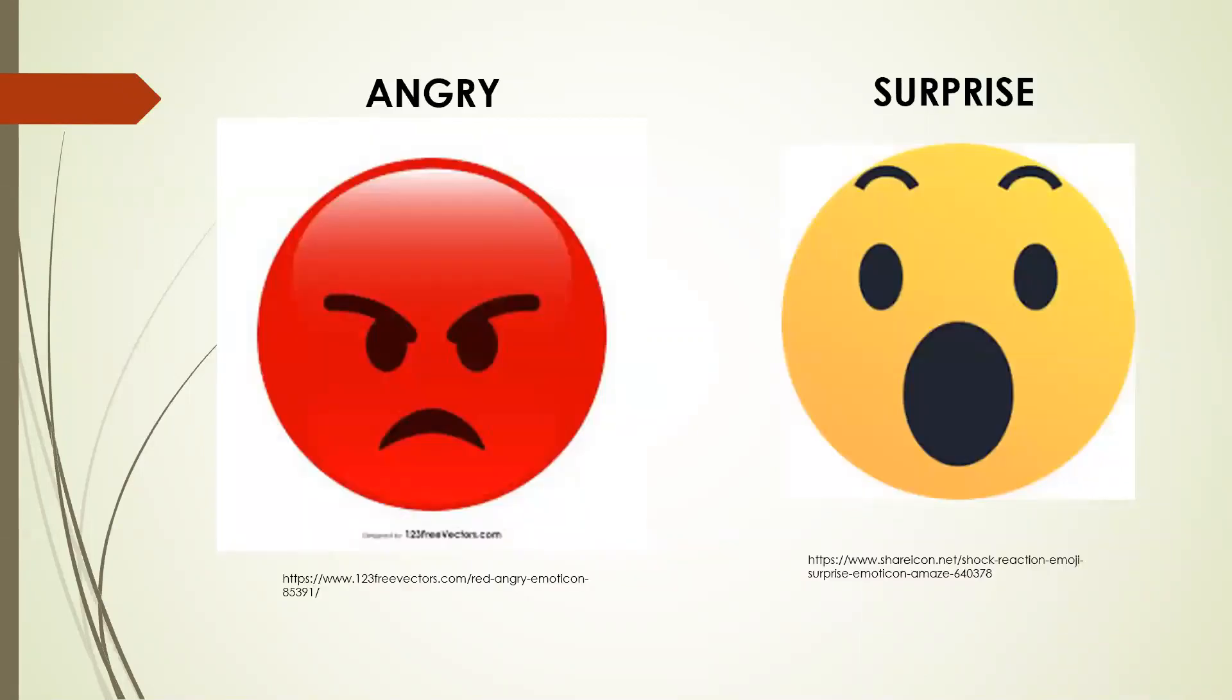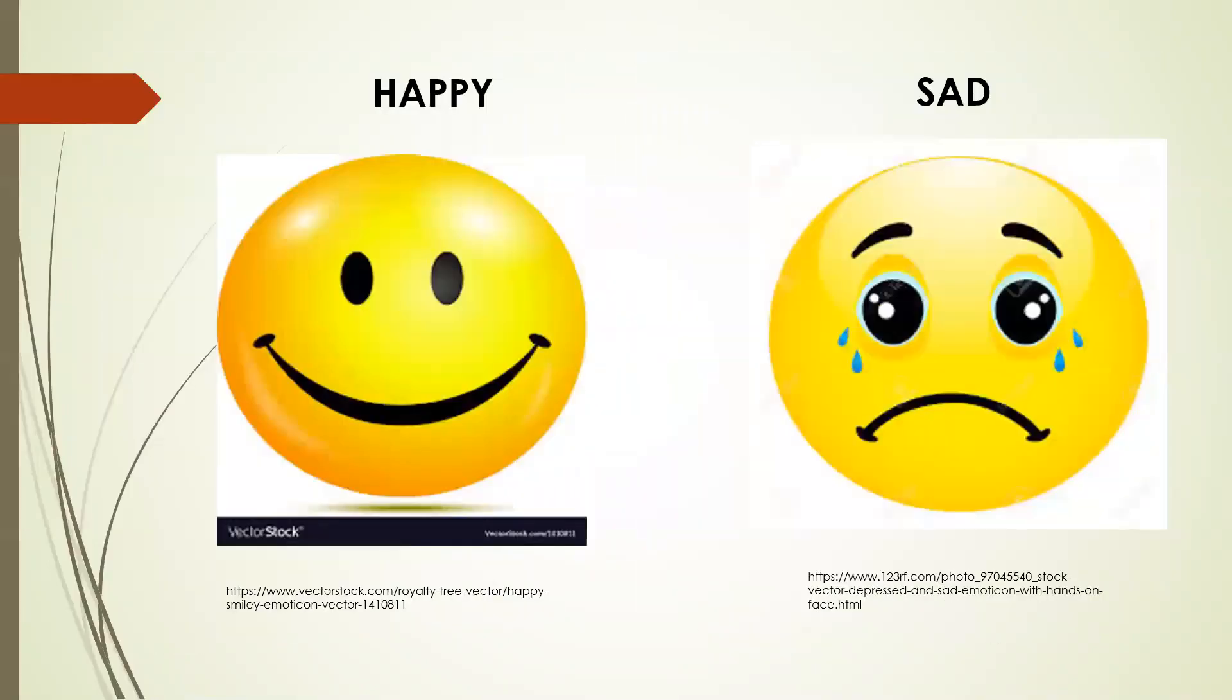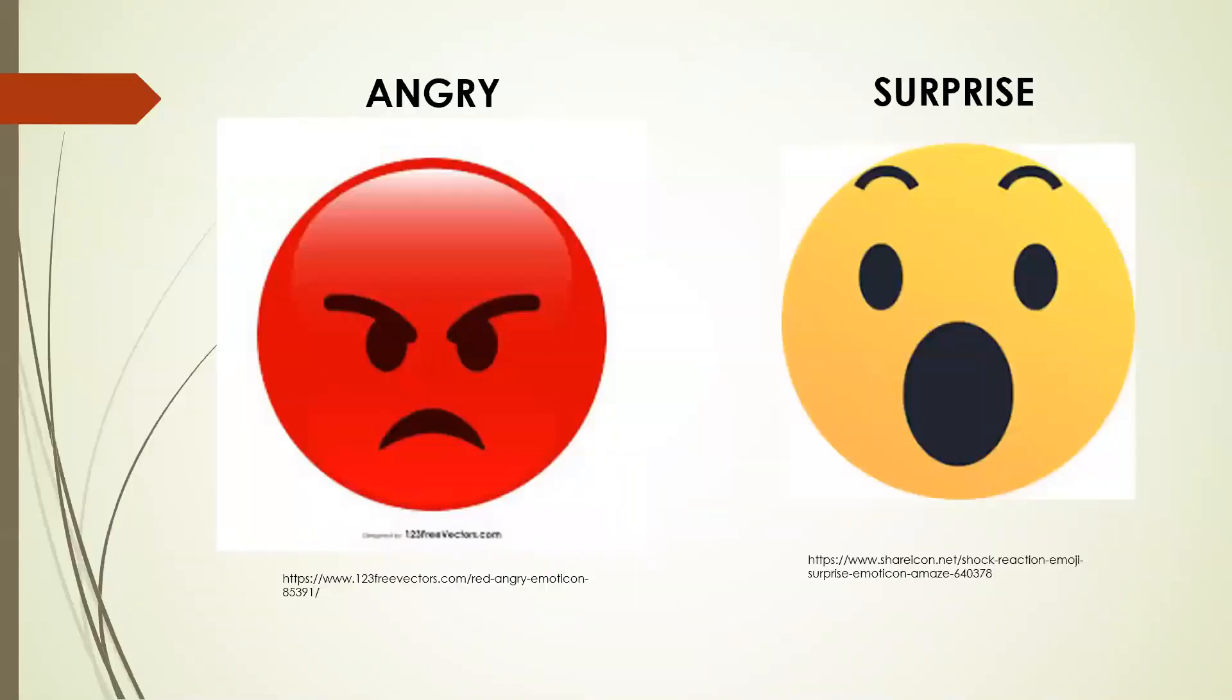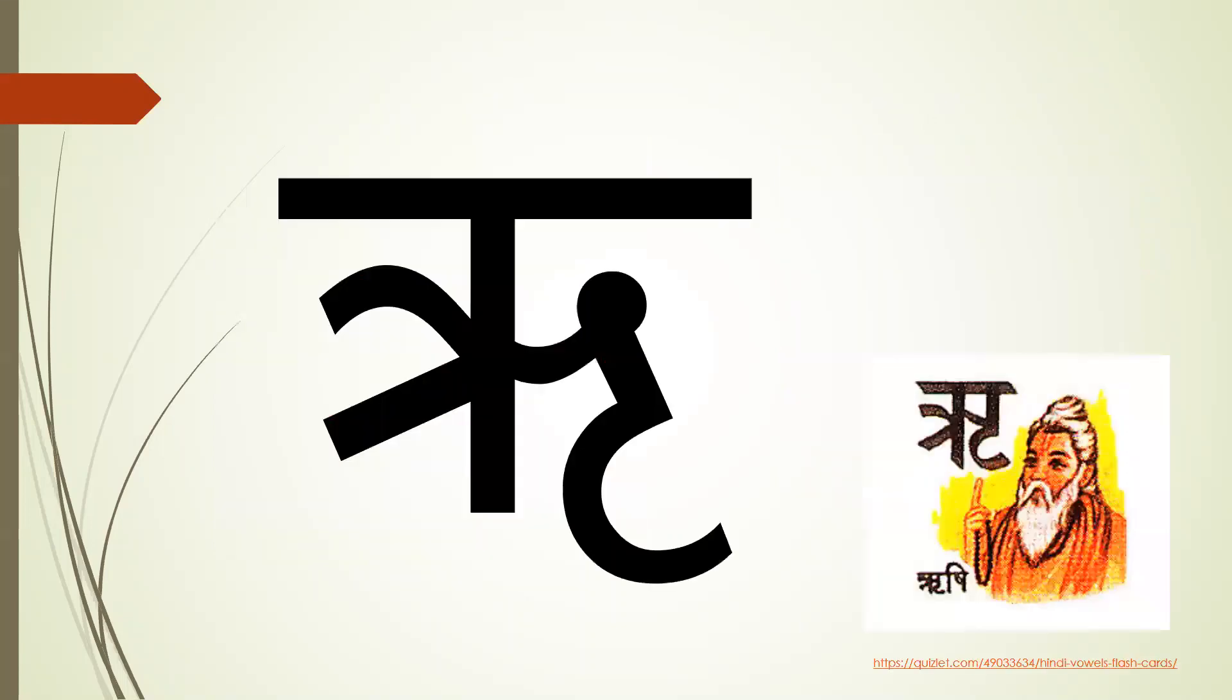Before we move on, if you have to say I am mad or I am angry, you will say main gussa hun. If you want to say I am surprised, you will say main hairaan hun. Now you have to practice all these feelings which is happy sad, khush udaas gussa hairaan. You can practice that and use that for your daily conversations with your mommy or daddy or with your friends.